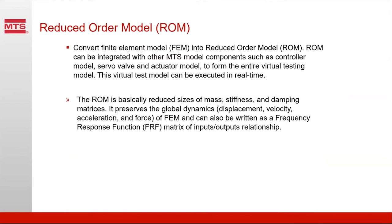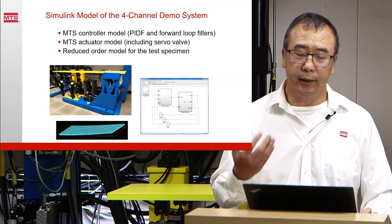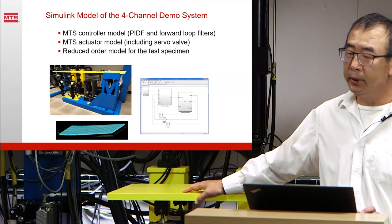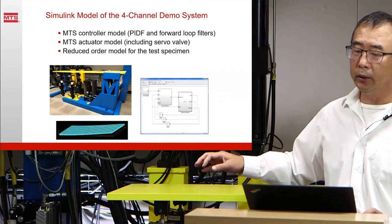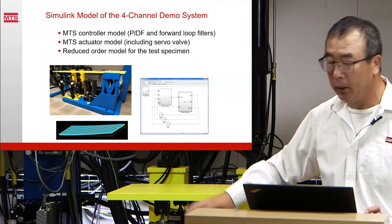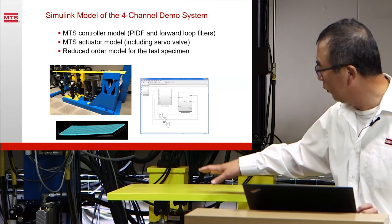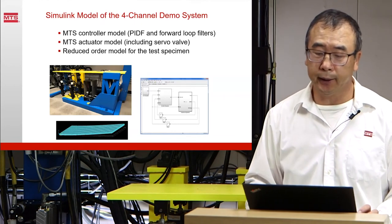So with all our components modeled, the full virtual test system is formed. For this example we have the four-channel demo system. We have the MTS controller model with all parameters, we have our actuator model, servo valve model, hydraulic model, and supply model. We also have a reduced order model for the specimen. Together they form a complete virtual test system.